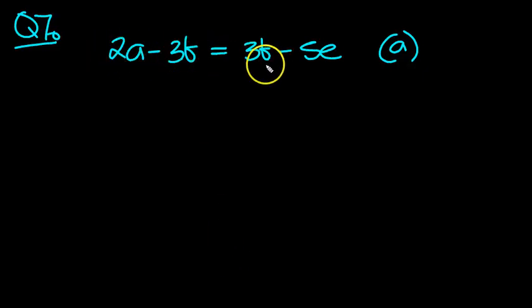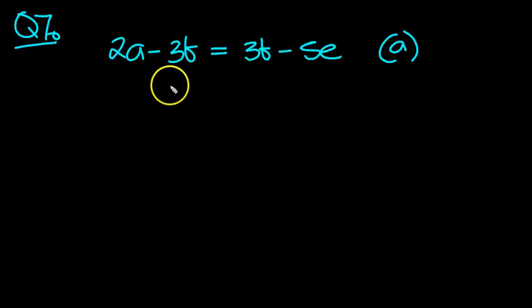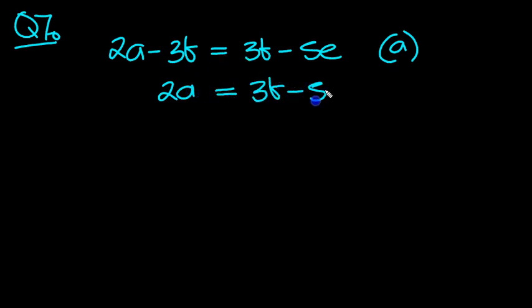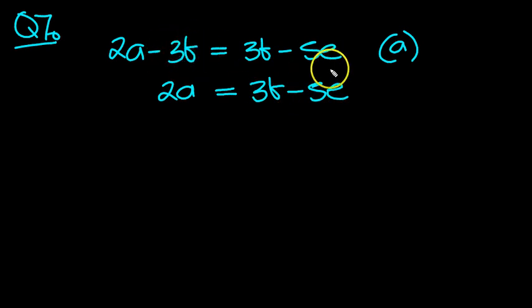2a minus 3b equals 3b minus 5e, and we want to rearrange it for a. So leave the 2a where it is on that side. Leave the 3b and the minus 5e where they are. Simply move this minus 3b across the equals to become plus 3b.